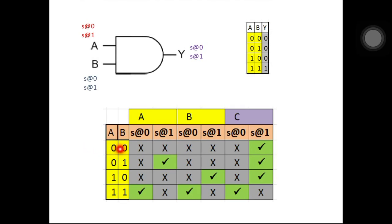By using the 0-0 input pattern we can achieve stuck-at-1 fault at node C. By using 0-1 pattern we can achieve stuck-at-1 fault at node A and stuck-at-1 fault at node C. So these are the faults which are covered by all the patterns as shown in the table.